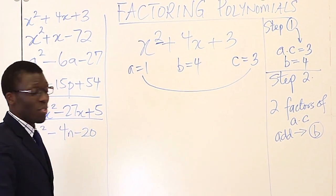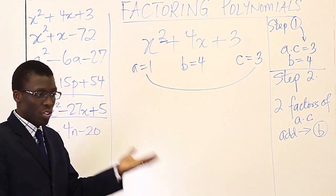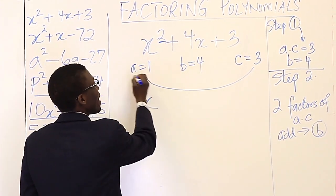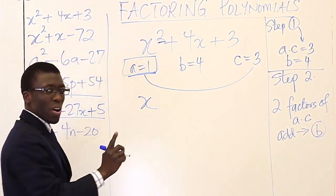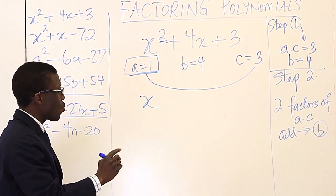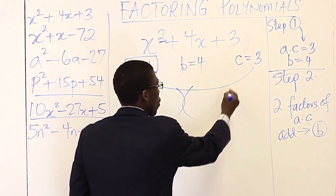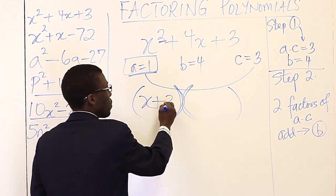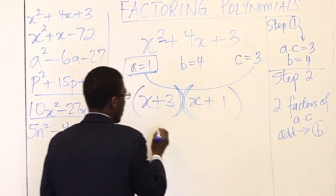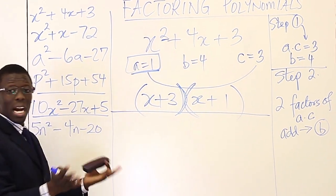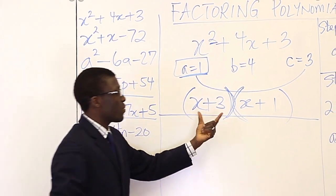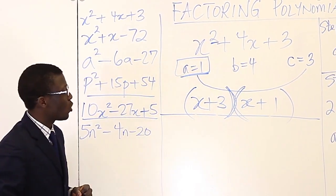Well, that's pretty straightforward in this case. 3 times 1 is 3. 3 plus 1 is 4. So if we come back, and because a is 1, this is very important, because a is 1, part of what we can do is we can just make two parentheses, and in the first one we write x plus 3, and the second one we write x plus 1. We're actually done. That's it.